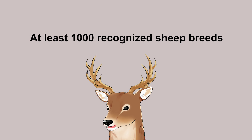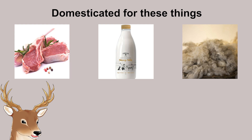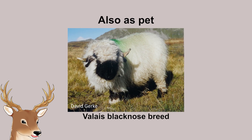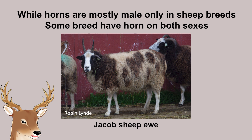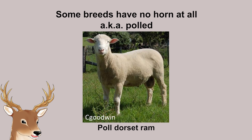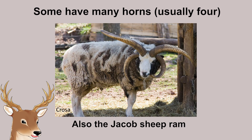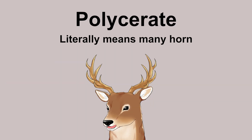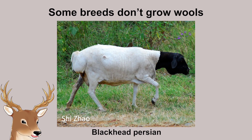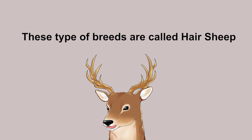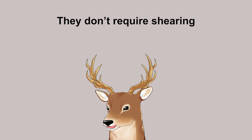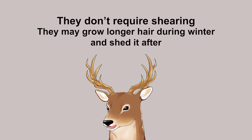There are two distinct groups of breeds: the European breeds and the Asian breeds. Research has also shown several cases of introgression between sheep and wild ovines, which contributes to the high variety of breeds and characteristics. There are probably at least a thousand sheep breeds, generally domesticated for three things: meat, milk, and wool — and some as pets. Some breeds have horns on both sexes, like the Jacob sheep. Some have none at all — the polled breeds — like the Poll Dorset. Some breeds even have more than a pair of horns, like the Hebridean sheep and the Jacob sheep; these conditions are called polycerate. While most sheep nowadays have wool, some breeds have hair like their ancestor. These are simply called hair sheep. These breeds don't require shearing; like wild ovines, some might grow longer hair during winter and shed their hair after.